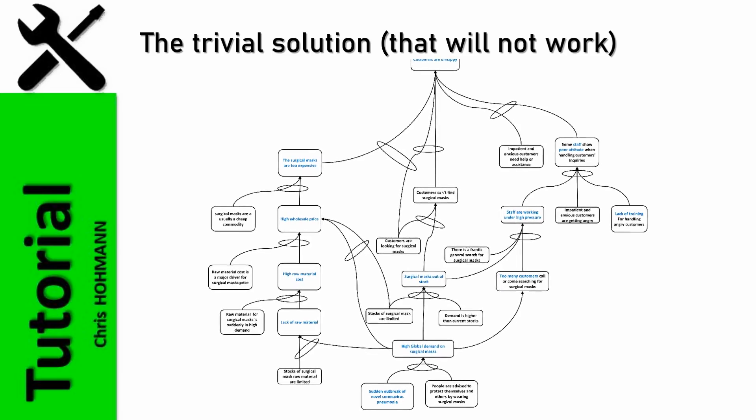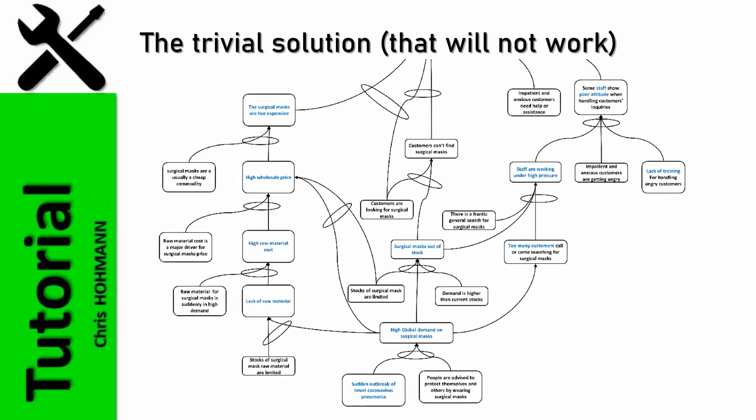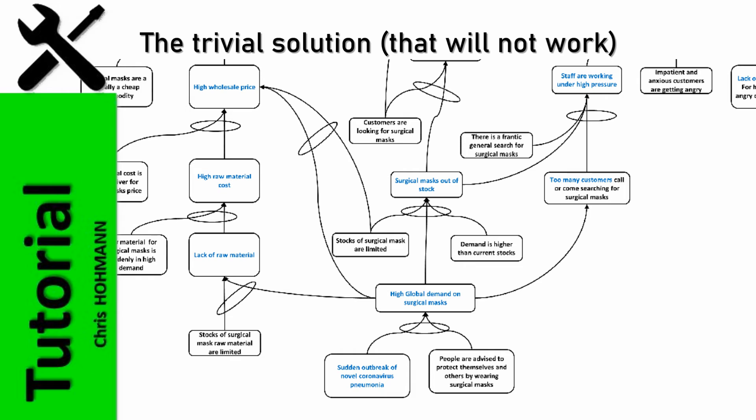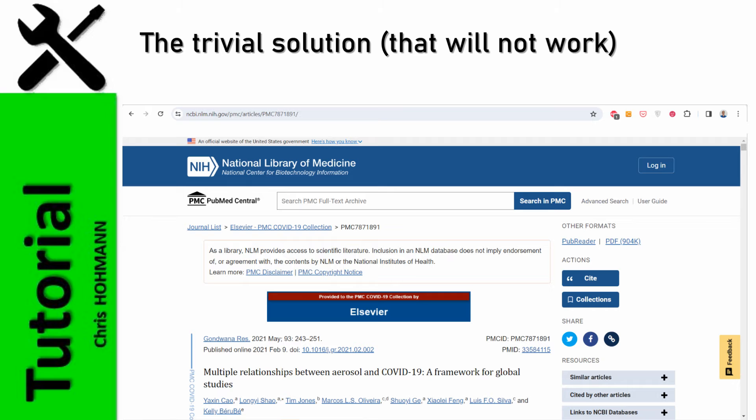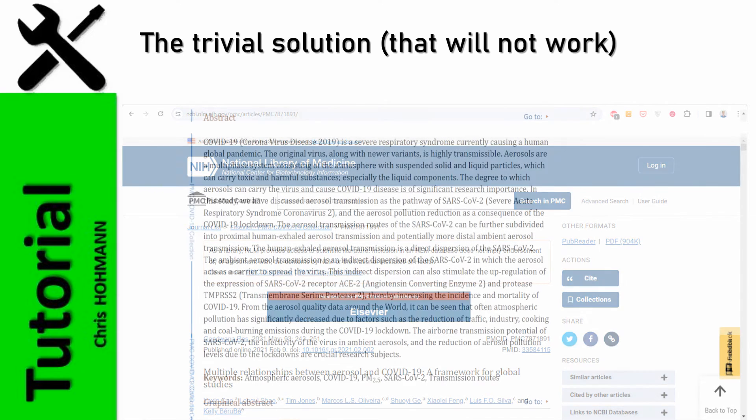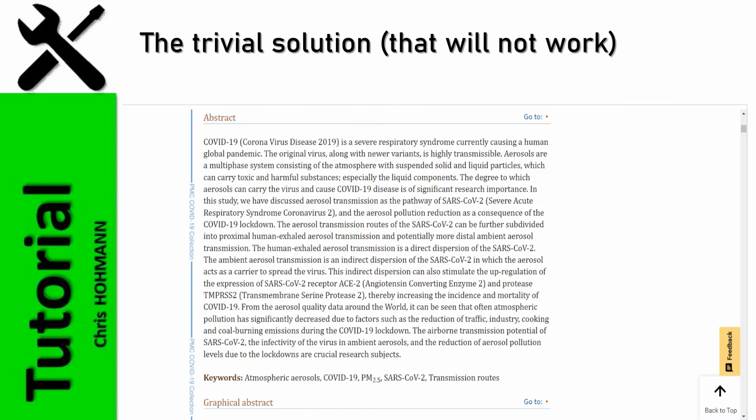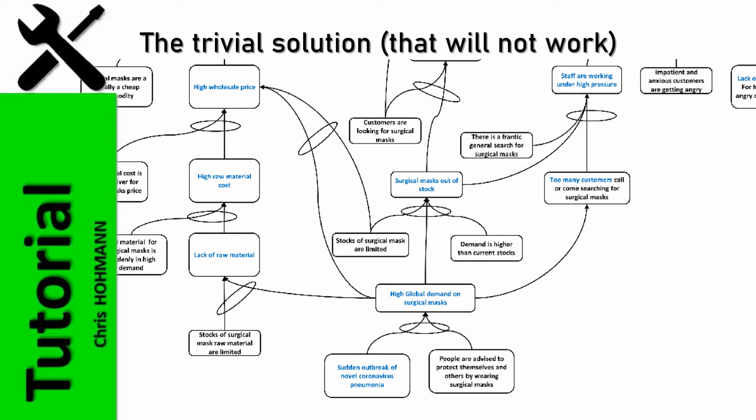If we reconsider the current reality tree and the fact that the two bottom events must exist simultaneously for the effect to happen, the trivial solution would be not to advise people to protect themselves with surgical masks from the beginning. If people didn't know that surgical masks are a cheap and easy way to protect against aerosol transmission of COVID-19, the sudden disrupting demand for masks could not have happened. Logically speaking, if the bottom right entity can be eliminated, the whole current reality tree collapses, and the undesirable effect vanishes.